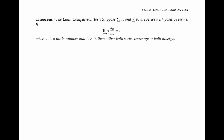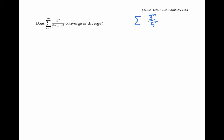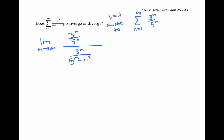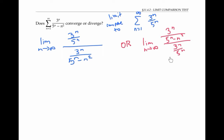Let's try the limit comparison test on the problem we were just working on. We still want to compare to the same series, three to the n over five to the n, but this time using a limit comparison. So we take the limit as n goes to infinity of the ratio of terms: three to the n over five to the n, divided by three to the n over five to the n minus n squared. It doesn't actually matter which term goes on top and which goes on the bottom — if this ratio is a finite number bigger than zero, its reciprocal will also be a finite number bigger than zero. So I'll stick with this computation.